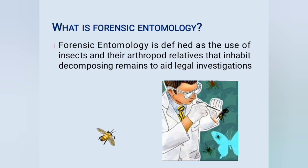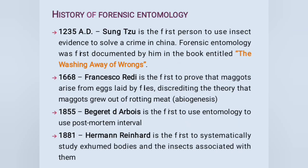The history of forensic entomology: in the year 1235 AD, Sung Tzu was the first person to use insect evidence to solve a crime in China. Forensic entomology was first documented by him in the book entitled 'The Washing Away of Wrongs.' An animal was killed in a village in China; suspects were called with their sickles, and flies got attracted to only one sickle, providing serological evidence. The person to whom that sickle belonged was identified as the murderer.